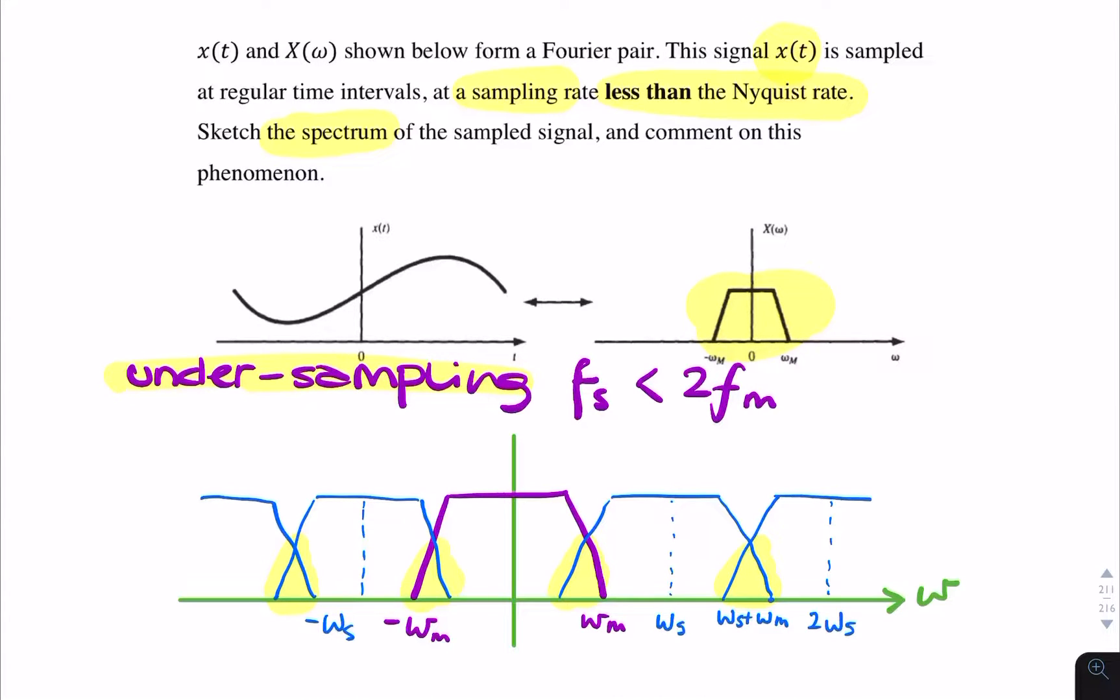So to get the full mark, you would need to label the axis correctly. You'd need to show an infinite number, well, several overlapping spectra. So you'd need to have the original spectra centred at zero. You'd need to have at least one additional spectrum in the positive and negative axes. And you'd need to label the sampling frequency and the bandwidth, omega m, at least to get the full mark.